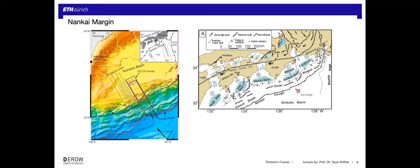Going back to the marine setting — looking at Japan, the Nankai margin in southern Japan. This is the island of Honshu, with a very large active accretionary wedge system due to a long history of subduction. The coastline is here, the trench is out here, and we have the Kumano basin, which is one of a whole series of forearc basins that form small basins along the coastline. The active arc is back inland. We have the trench, the accretionary complex, and on top of and behind the accretionary complex are these series of small forearc basins.